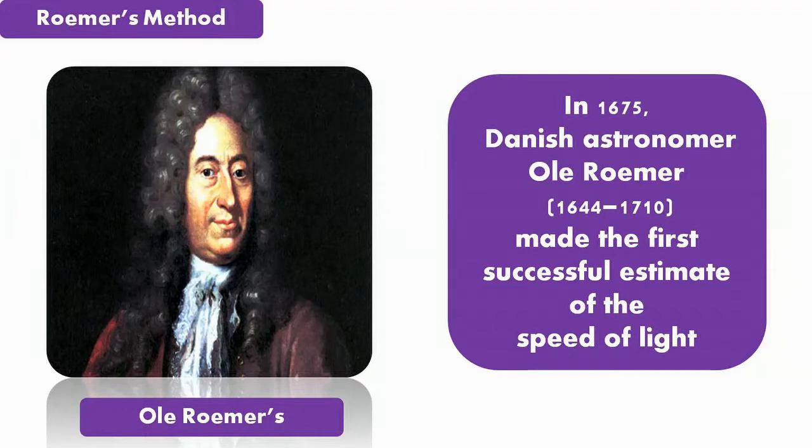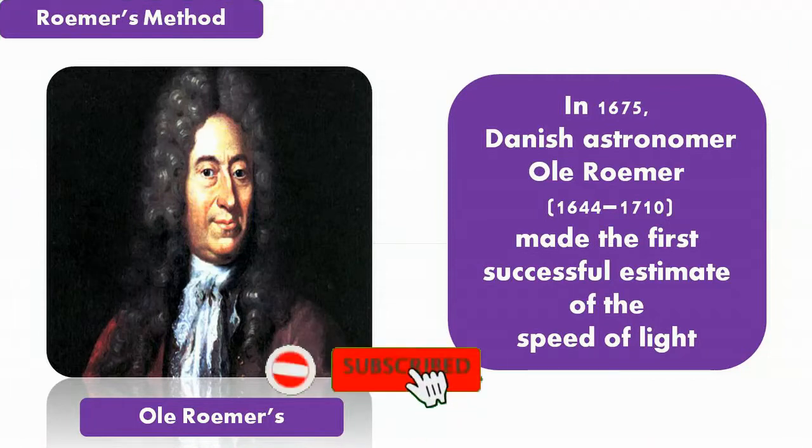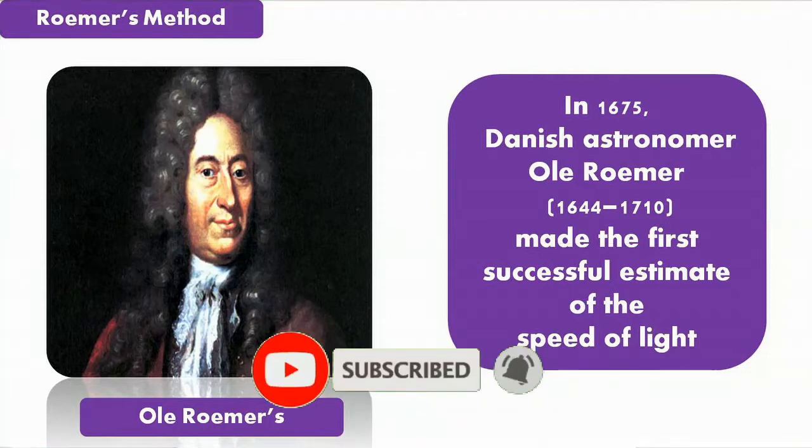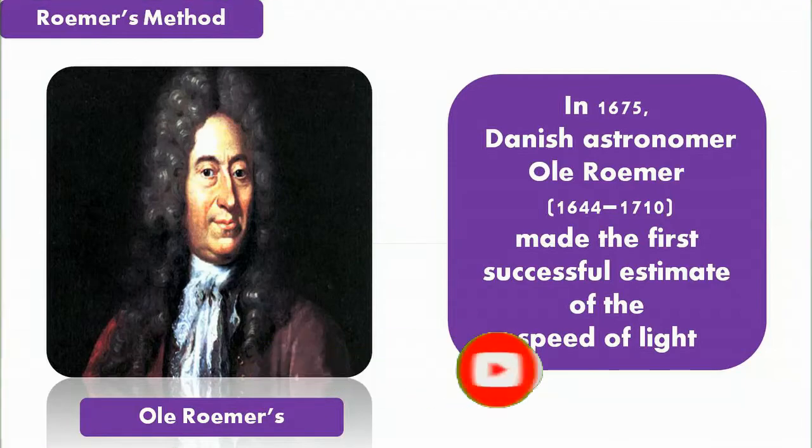In 1675, Danish astronomer Ole Roemer made the first successful estimation of the speed of light. The Roemer technique involved astronomical observation of Io, one of the moons of Jupiter.